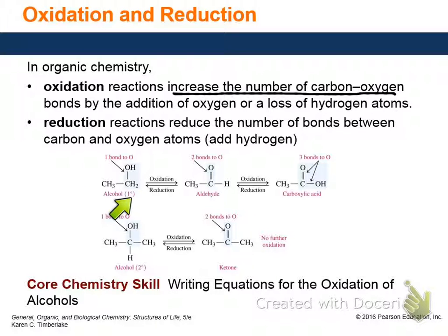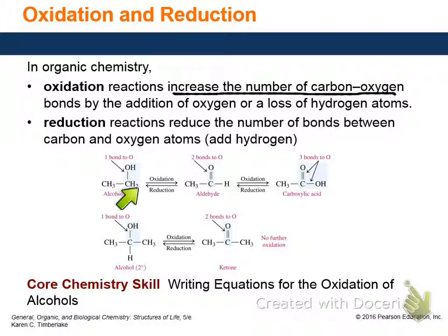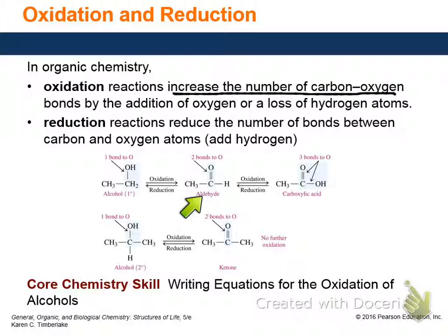Here's an alcohol — a primary alcohol — because this carbon only has one carbon attached to it. When you do the oxidation, you end up with two bonds. But when you made the two bonds, you lost a hydrogen here and a hydrogen here. It's kind of like a dehydration reaction in the sense that you remove one thing from each end and form a double bond. That's an aldehyde that's formed. And if you further oxidize an aldehyde — which happens a lot — you get carboxylic acids.